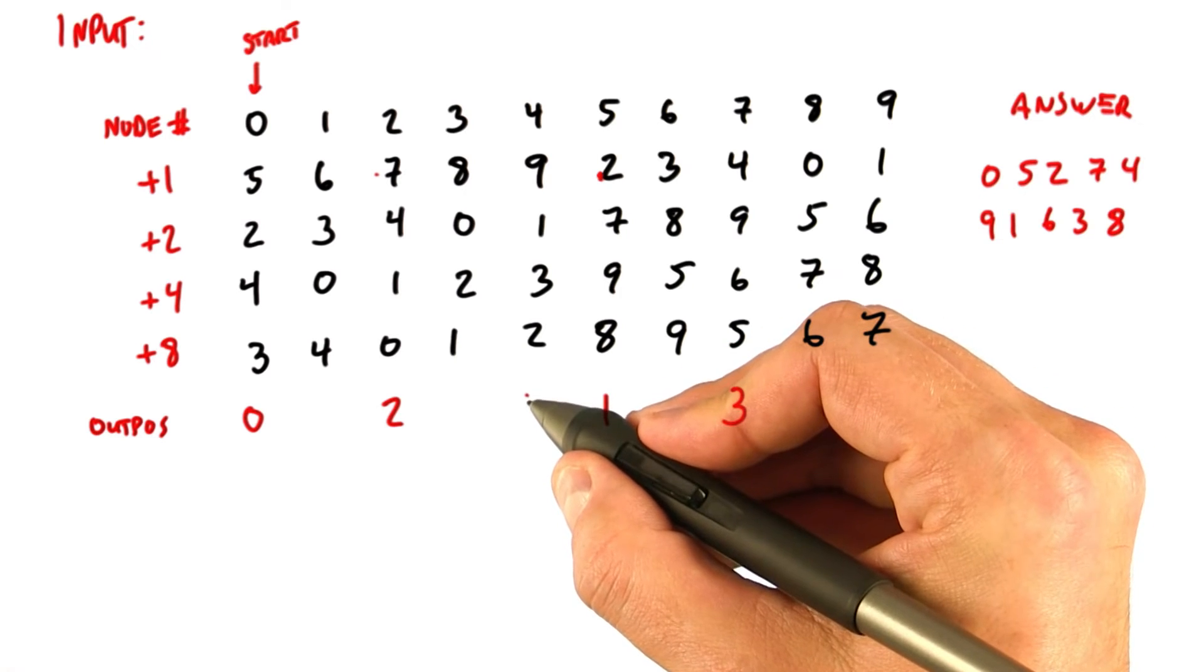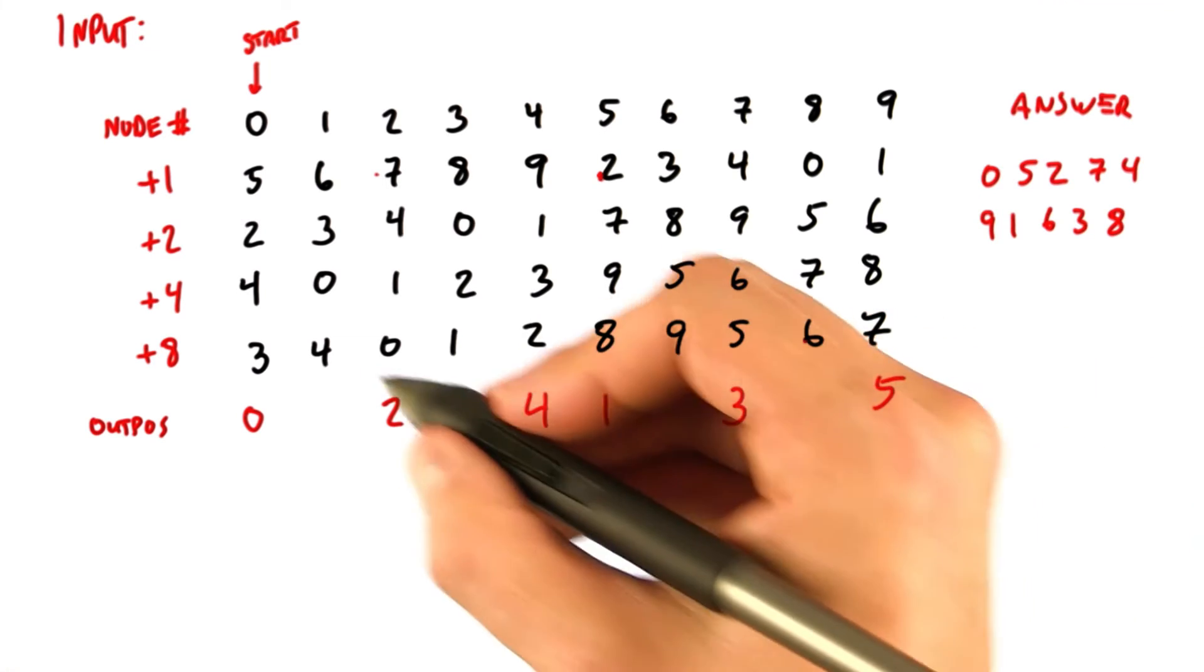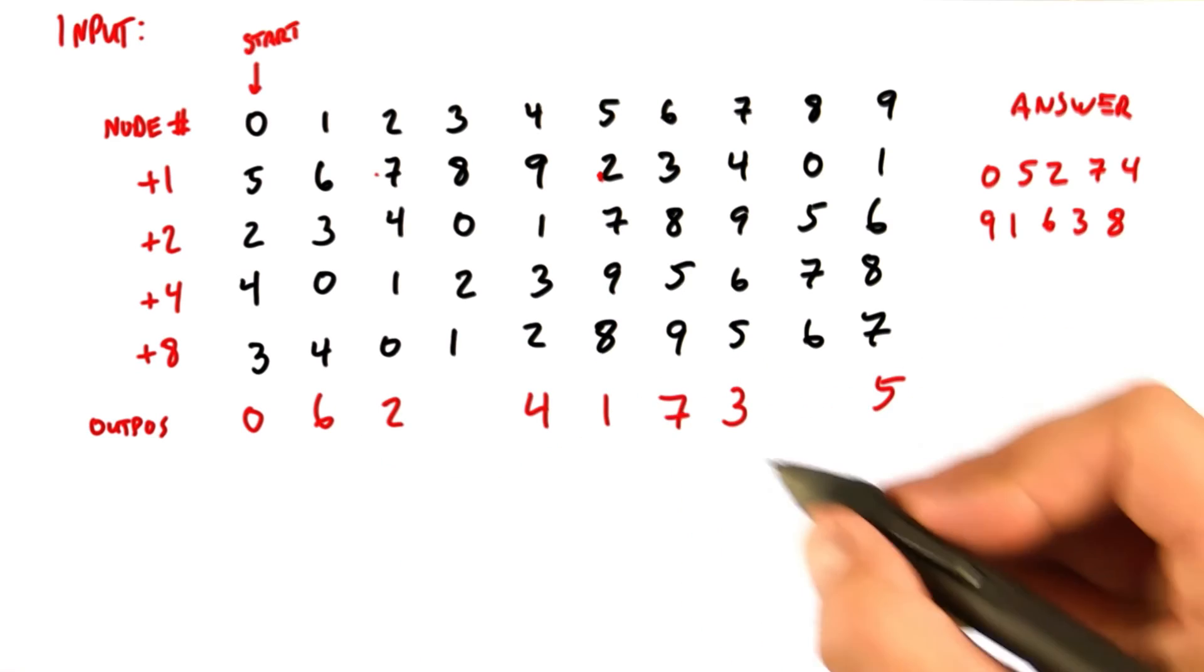Node 4 will get position number 4, node 9 gets position 5, node 1 gets position 6, and node 6 gets position 7.